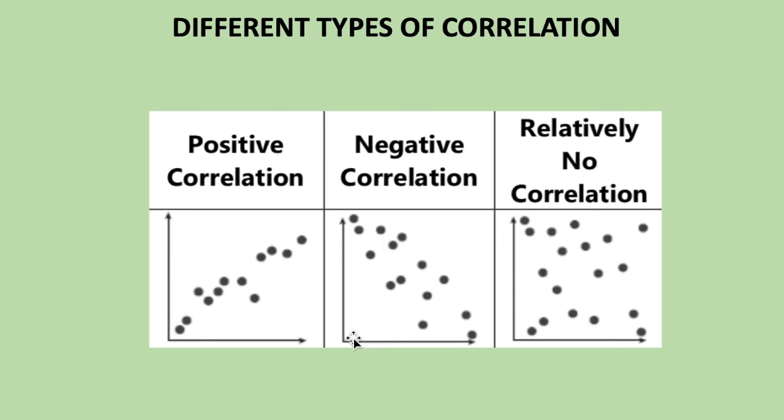And as one axis, as the x-axis increases, the y-axis is decreasing. So the points are gradually going down. And then for graphs that don't show any kind of trend, they are said to have no correlation at all.